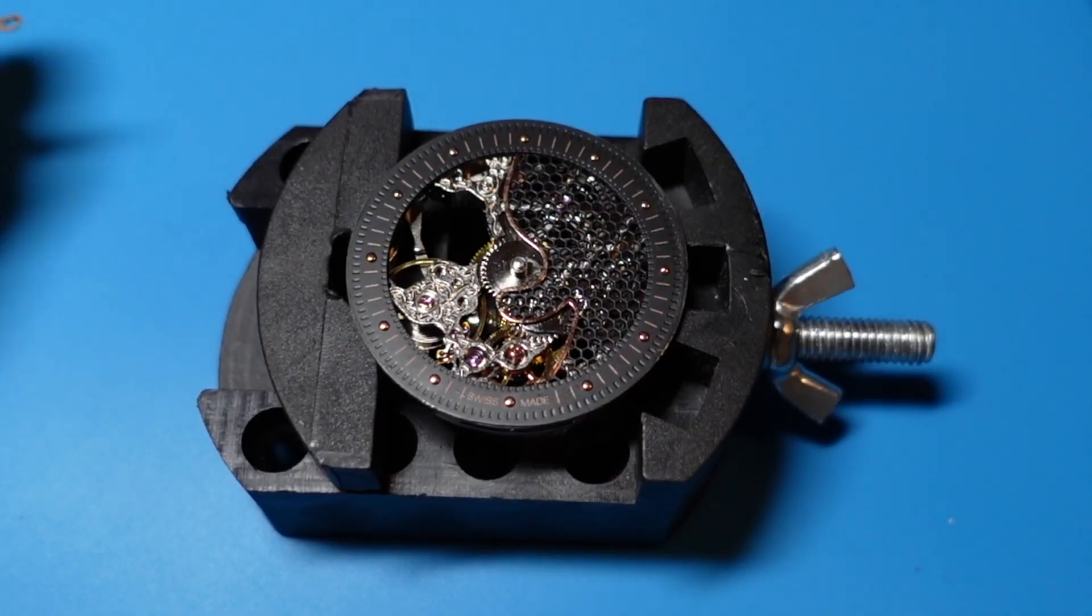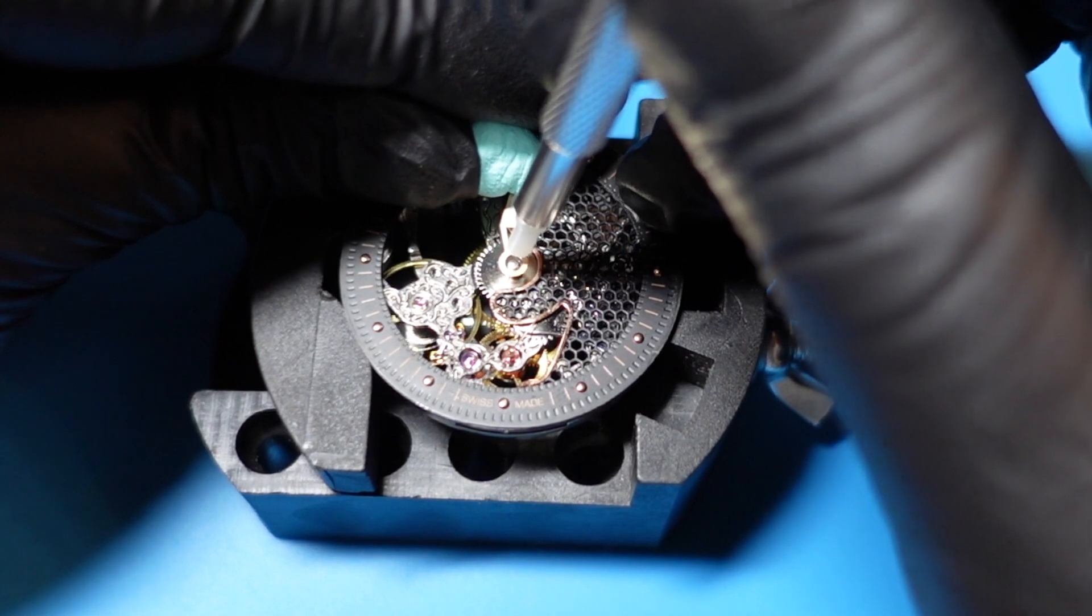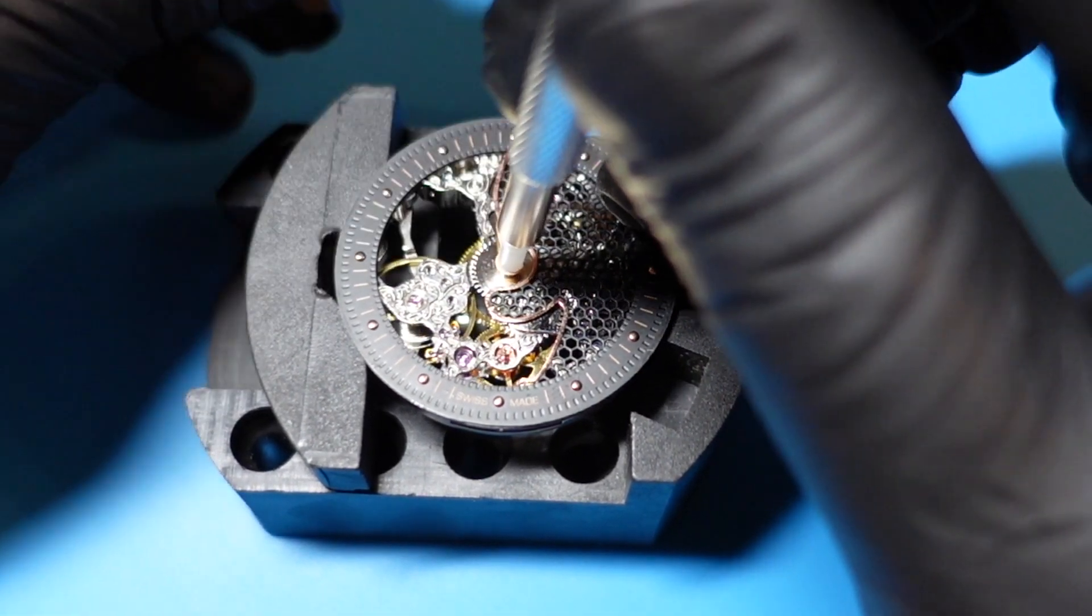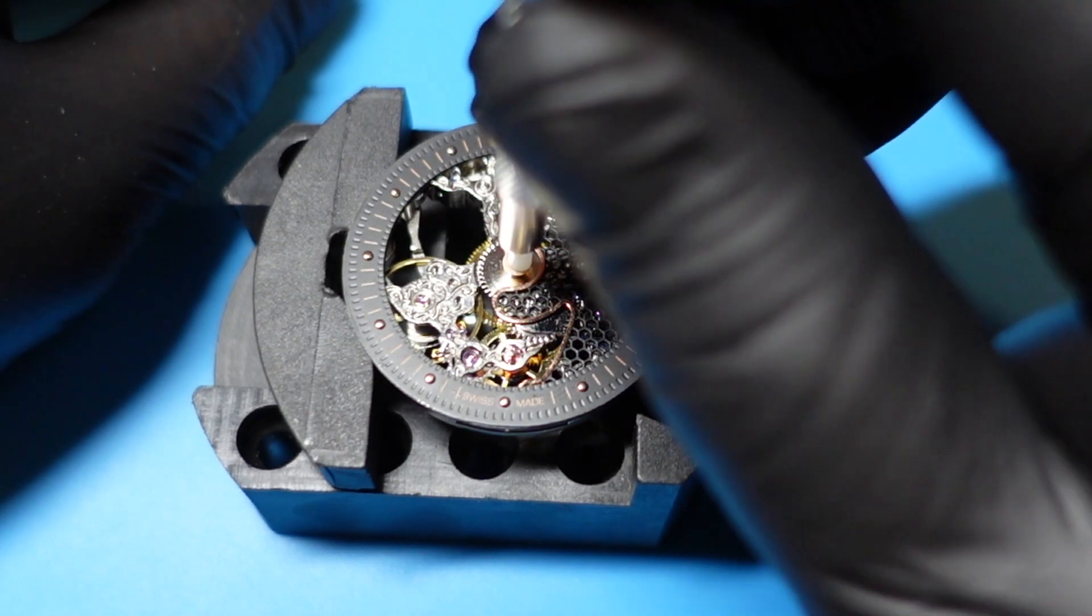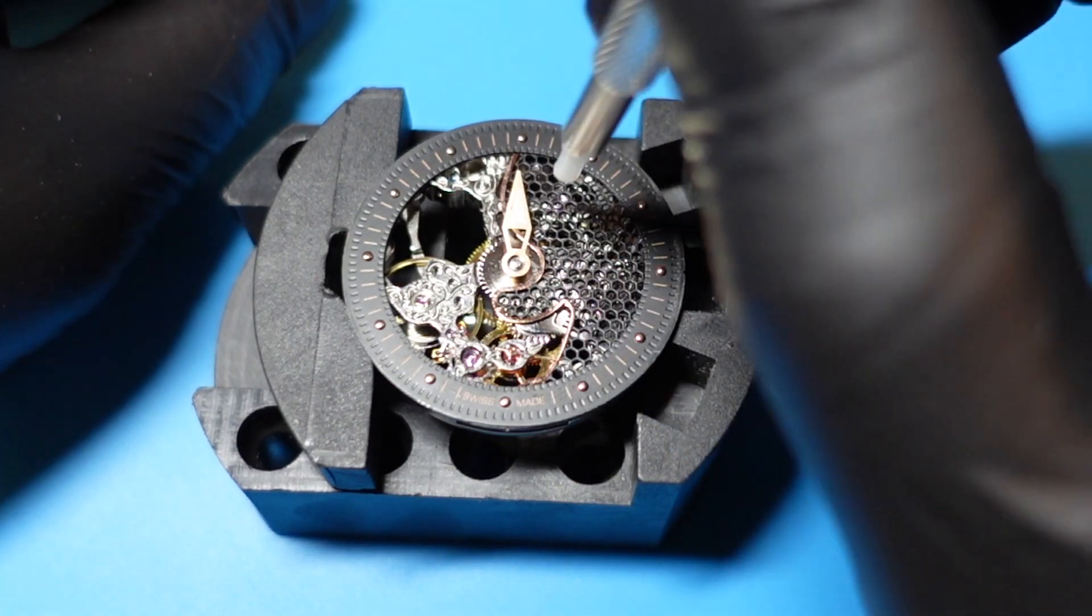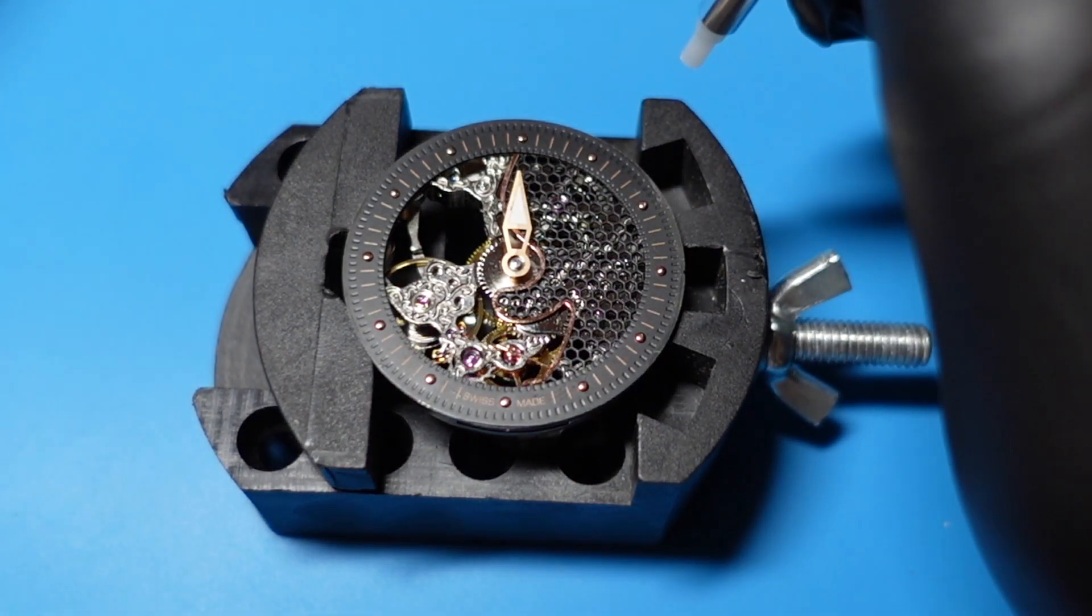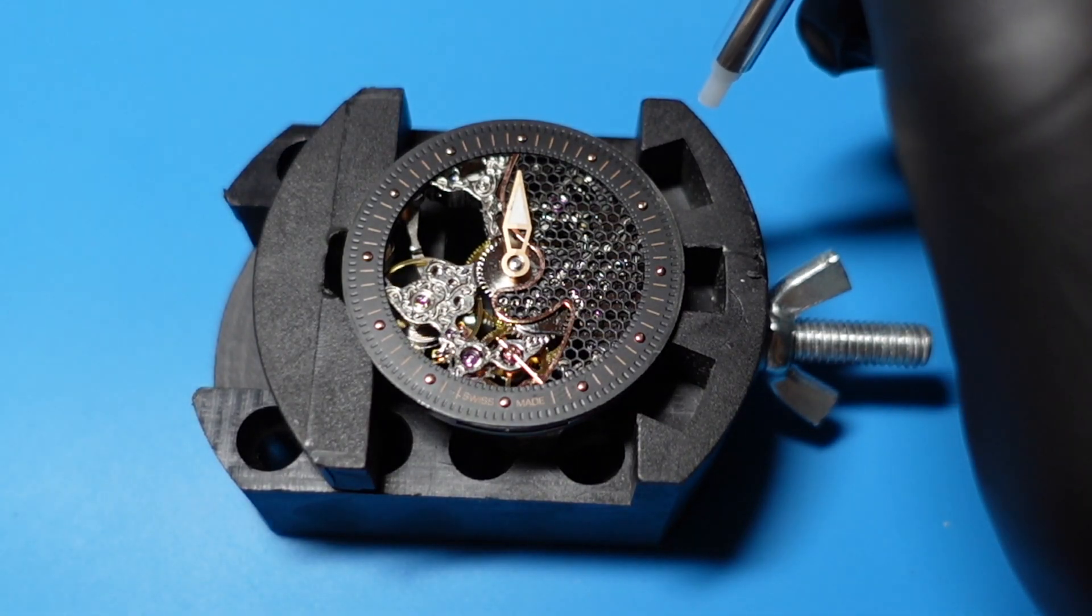To install the hands I use Rodico to place them on the dial and then my watch hand fitting tool to put them in place. Best practice dictates that you place the hour hand at 12 and the minute hand at 6 o'clock. I'll show you how to install the second hands in a separate video since it requires a lot of skill and I'd like to show you with the appropriate level of macros.